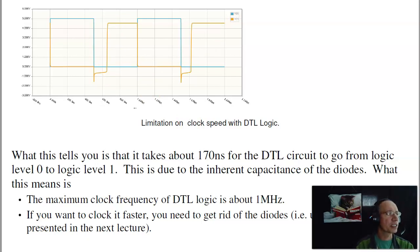The problem that's causing this is that diode. If I want to increase the clock frequency, I need to get rid of the diodes. That's what DTL logic is. That's our next lecture.